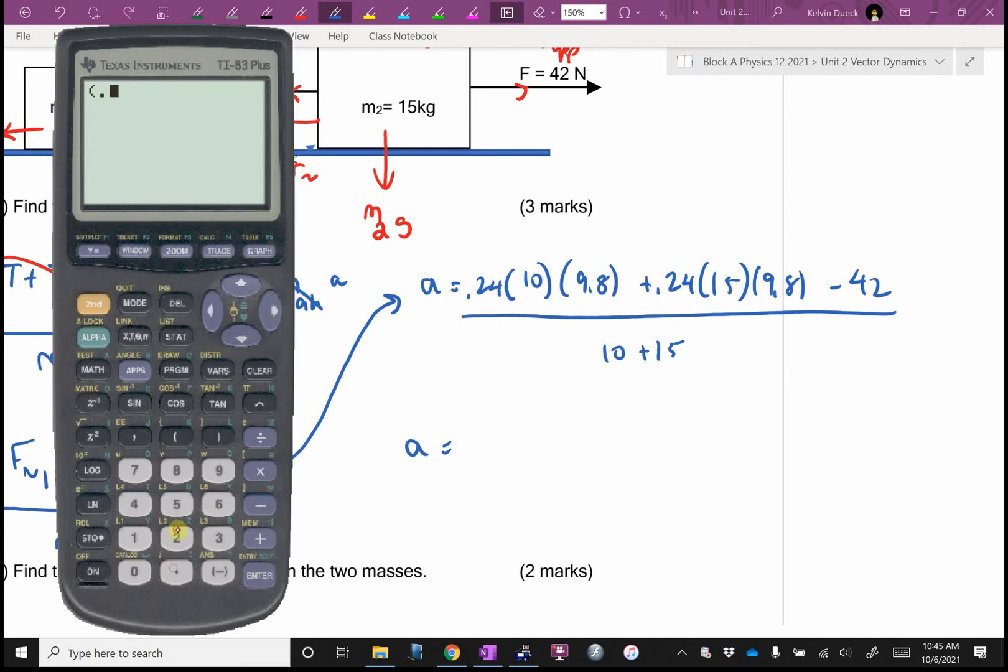Bracket, 0.24 times 10 times 9.8 plus 0.24 times 15 times 9.8 minus 42, close off the top, divided by 10 plus 15. Did y'all get 0.672? So it's barely decelerating. This is almost in balance. Yeah.